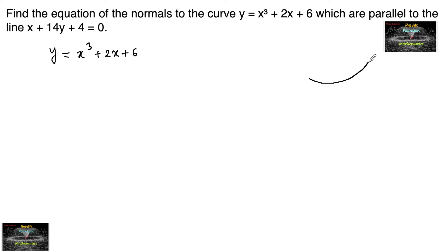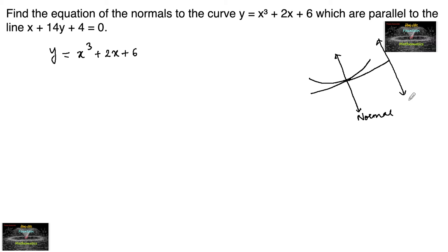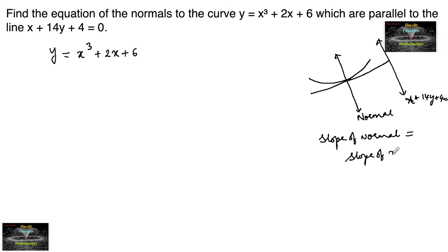Let the curve have a point where a tangent and a normal are drawn, and this normal is parallel to the given line x + 14y + 4 = 0. Since the normal is parallel to the line, we can consider the slope of the normal equal to the slope of the given line x + 14y + 4 = 0.